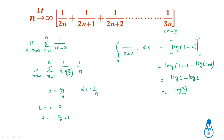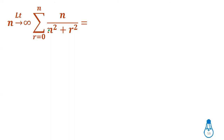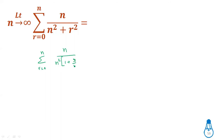Next problem — it is similar to the previous one. In this case, we expand the function and use summation format. Here we have r²/n² in the denominator. Setting x = r/n, we write the summation as: summation r = 0 to n of n/(n² (1 + r/n)²).